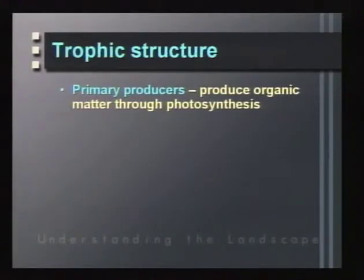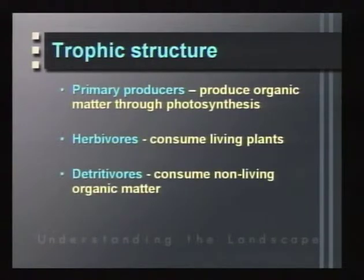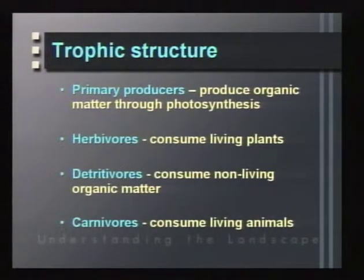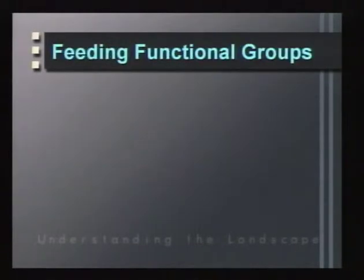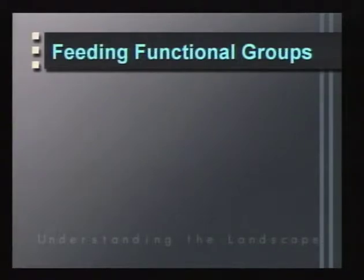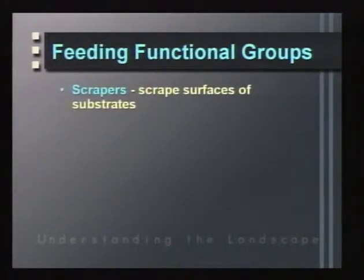Trophic structure is broken down into primary producers, which produce organic matter through photosynthesis; herbivores that consume living plants; detritivores that consume non-living or dead organic material; and carnivores that consume living animals. Another way to classify organisms is by how they eat or gather their food — a system called feeding functional groups.